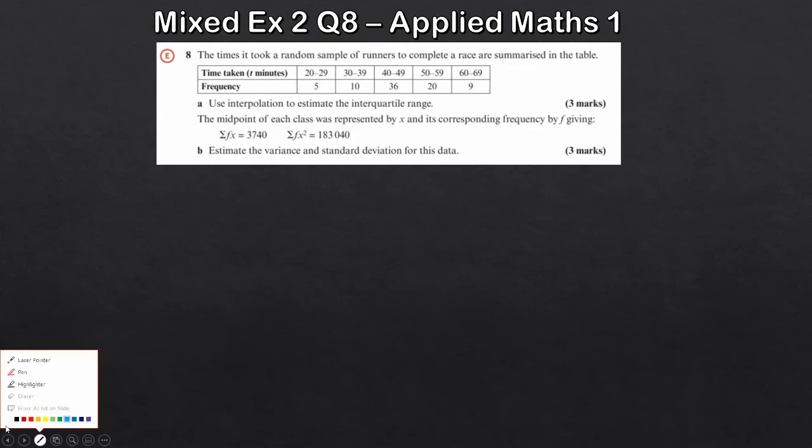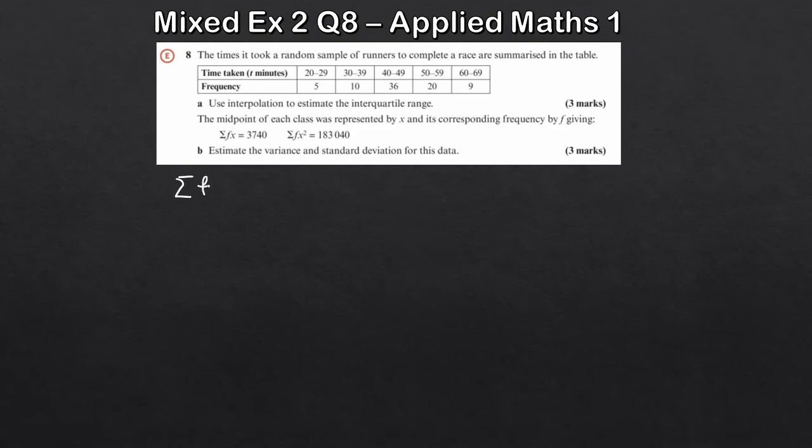We want to see if we can estimate the variance and standard deviation for this data. So we've been given a bit of information. We know the sum of fx. So we've been given sum of fx is 3705. We know the sum of fx squared is 183,005. So what we want to try and do now is work out the variance and standard deviation.